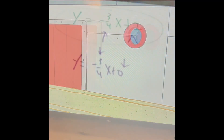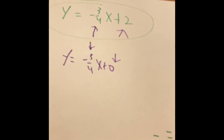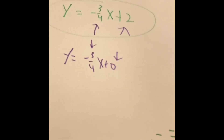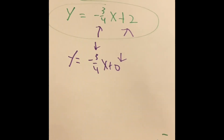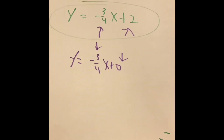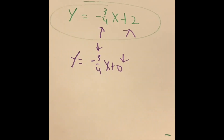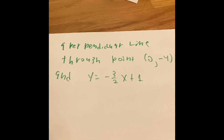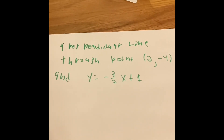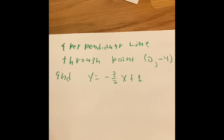That was an awesome clip — SpongeBob, Patrick, and Squidward were riding the train and the subway doors acted like parallel lines. Let's move on to our next problem. This time, it's a perpendicular line through points (0, -4) and y equals negative 3 over 2 x plus 1.